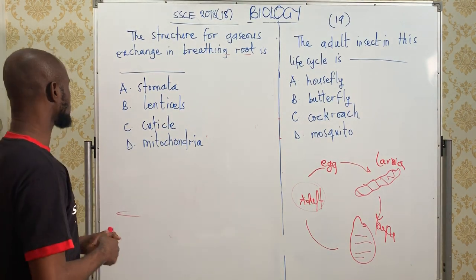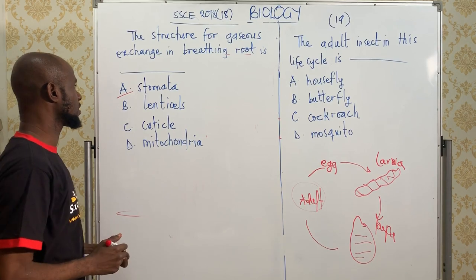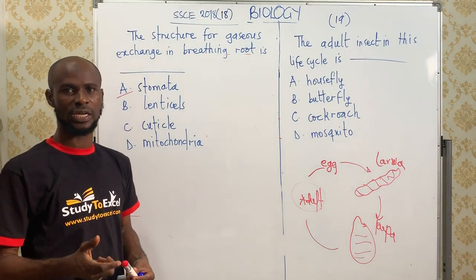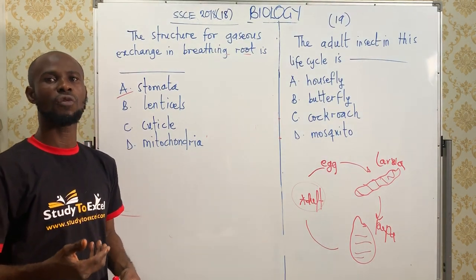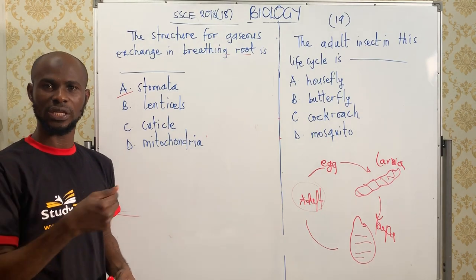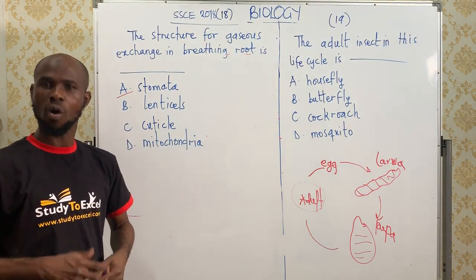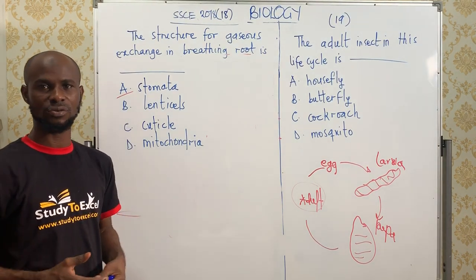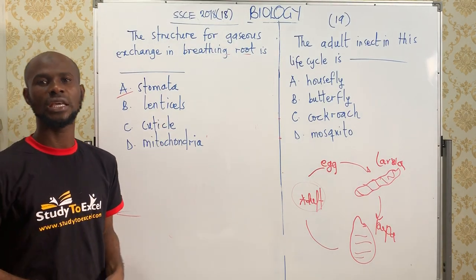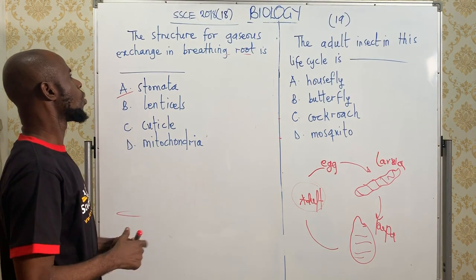The answer is stomata. The stomata is that particular pore that is located at the lower surface of the leaf — it's found in a leaf. While lenticels are cork cells, dead cells that are found at the bark of a stem. So the answer is stomata.